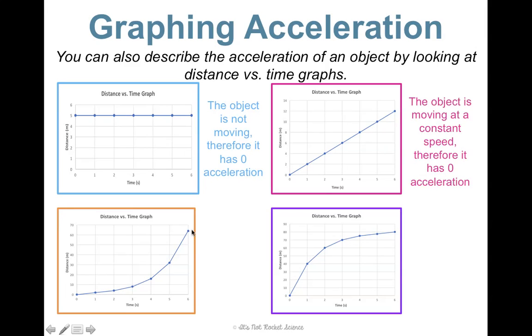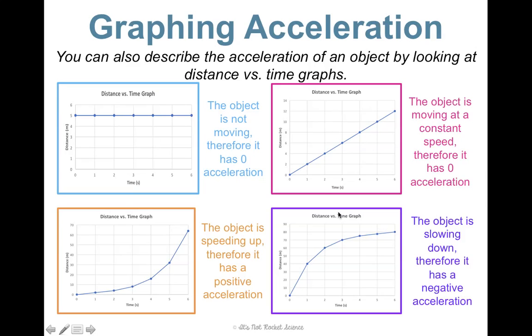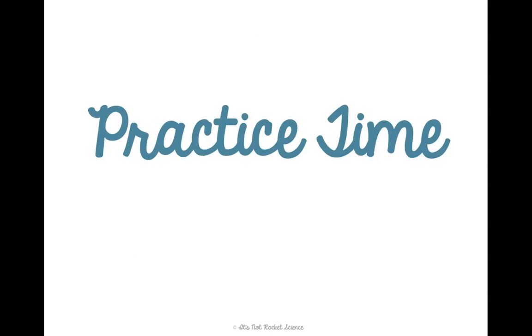Here, the line is getting steeper, thus the speed is changing, it's speeding up, thus this one has a positive acceleration. And then here, the line is getting flatter, so it's slowing down, thus has a negative acceleration. Now these graphs can be really tricky, but they can also be really helpful for understanding an object's motion. So we are definitely going to spend some time practicing this. Thank you, guys.